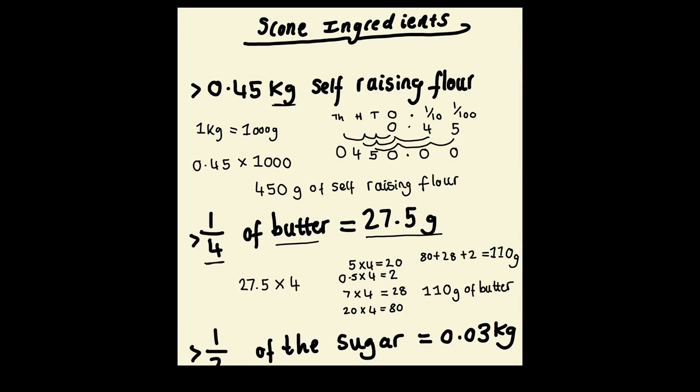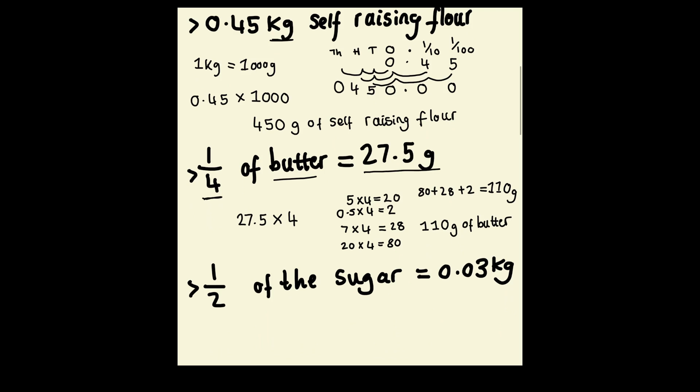For sugar, I know that half of the sugar is equal to 0.03 kilograms, and again kilograms are not the right measurement for this amount of sugar, so let's convert them into grams. We're going to times 0.03 by 1000, and this gives us 30. And that's only half the sugar, so we need twice that amount. 30 times 2 is 60, so we need 60 grams of sugar.